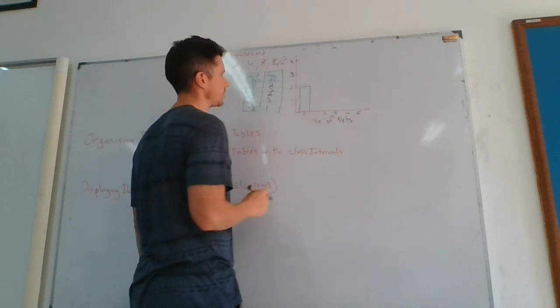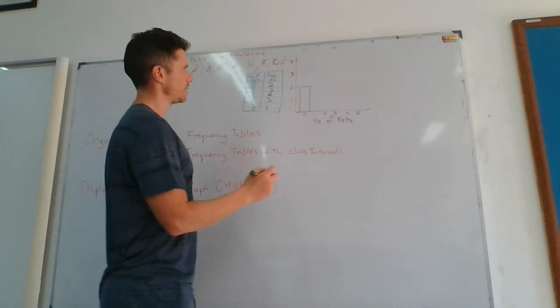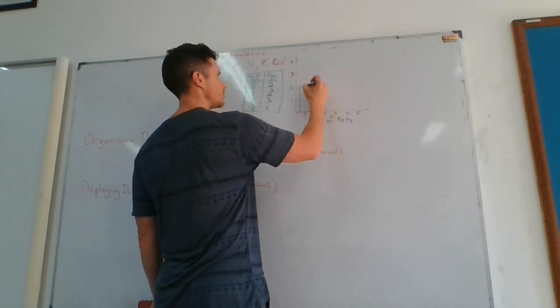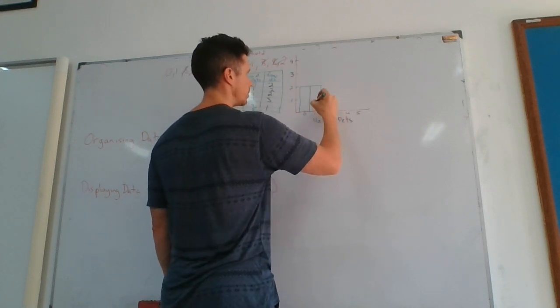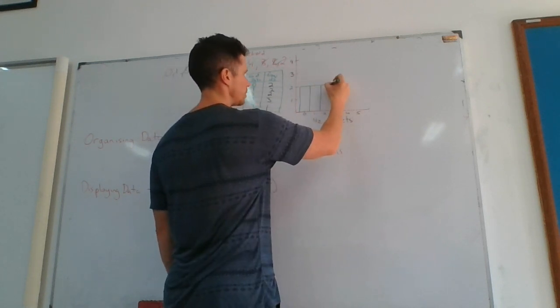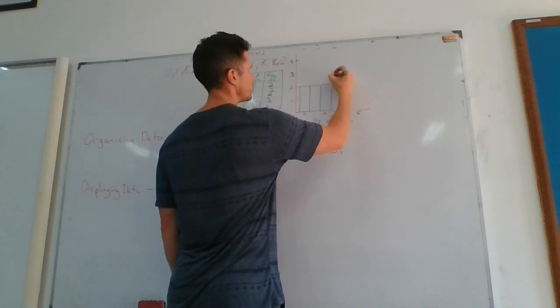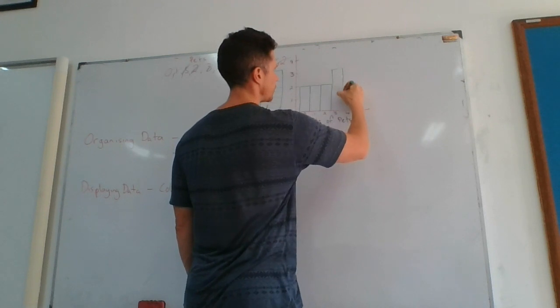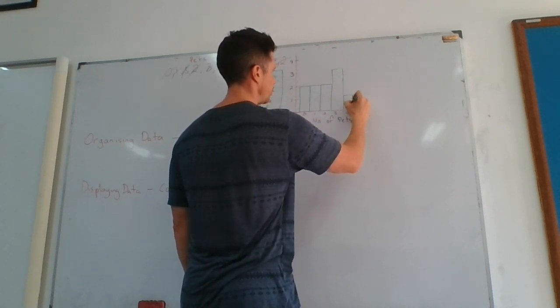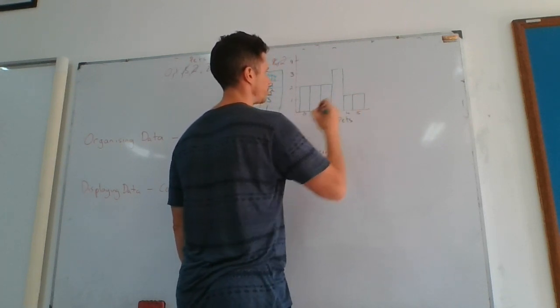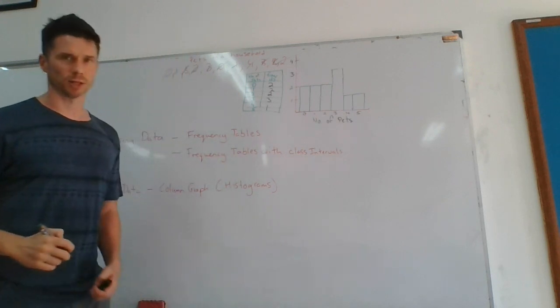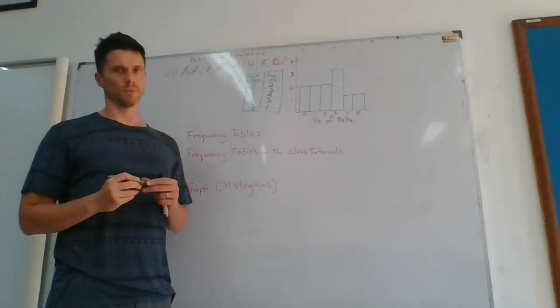Now what we notice with histograms is the next one will be joined on to the previous one. One also has two. Two also has two. Three goes up as far as three, so that one increases up here. Four goes to one. Five goes to one.